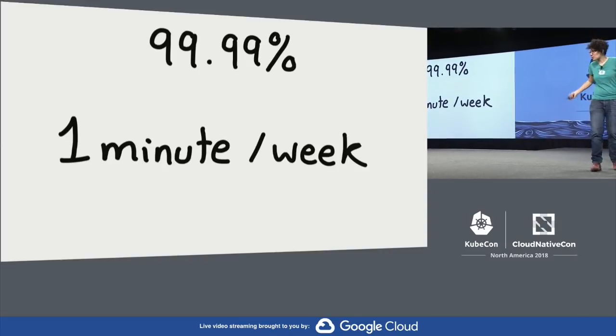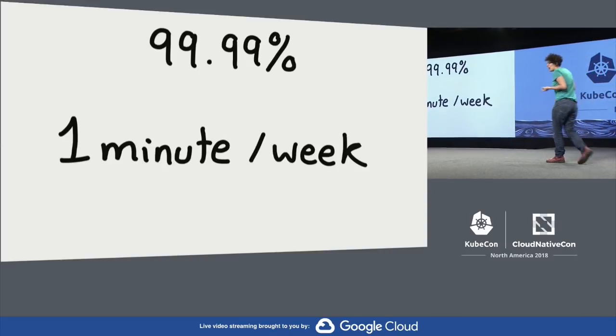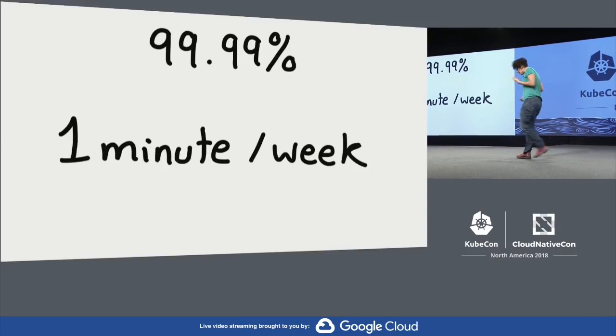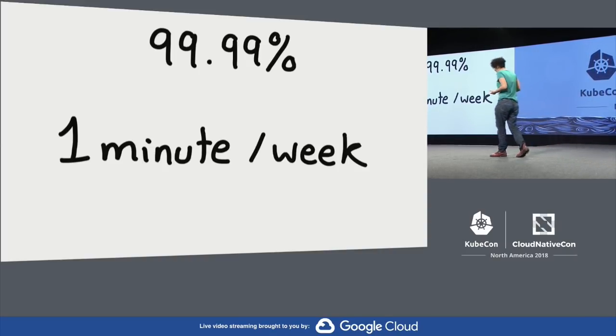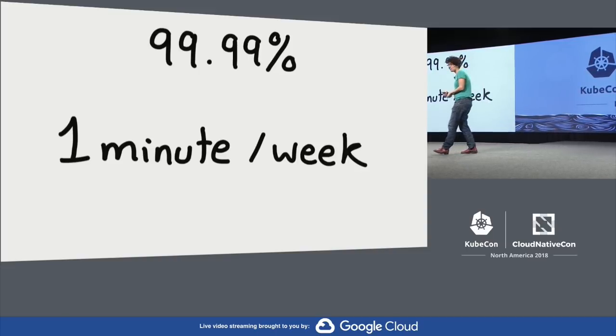A lot of the services that we need to operate at Stripe need to have availability of four nines or above. And if you want to be up 99.99% of the time — I calculated this — you can be down about a minute a week, including everything that goes wrong, not just what you may have done to your infrastructure.